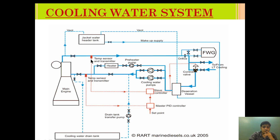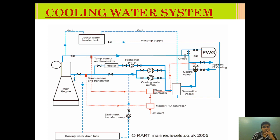Suppose the outlet temperature is 80 degrees Celsius and the desired feed temperature is 78. If the temperature is high, it will bypass the jacket outlet less and allow more HT cooled water. By regulating the mixing of the jacket water outlet and the water coming from the HT/LT cooler, it helps maintain the correct temperature.